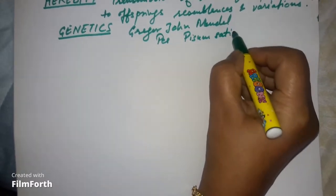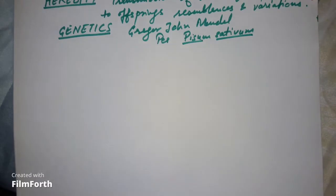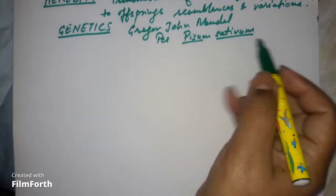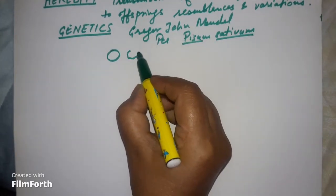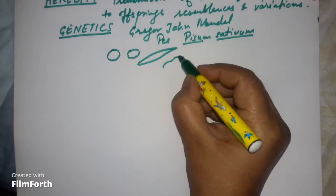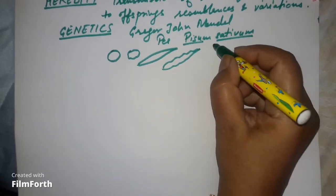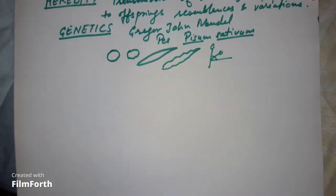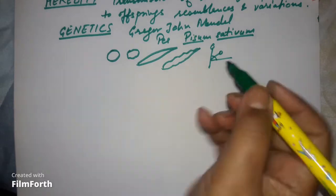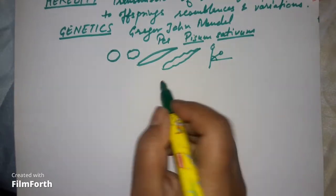The scientific name of the pea plant is Pisum sativum. Mendel conducted his studies on pea plants because he could observe many variations — some had smooth seeds, some had wrinkled seeds, some had smooth pods, some had constricted pods, and flowers differed in axillary or terminal positions. He studied seven different types of variations in this plant.